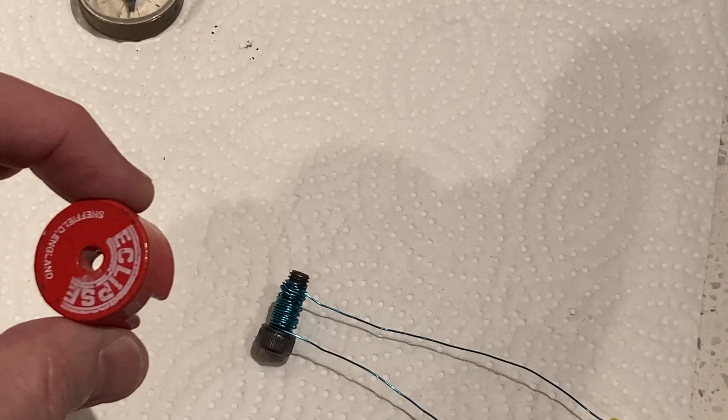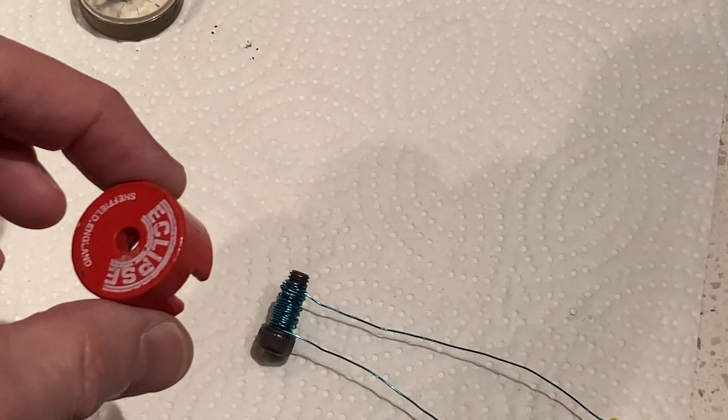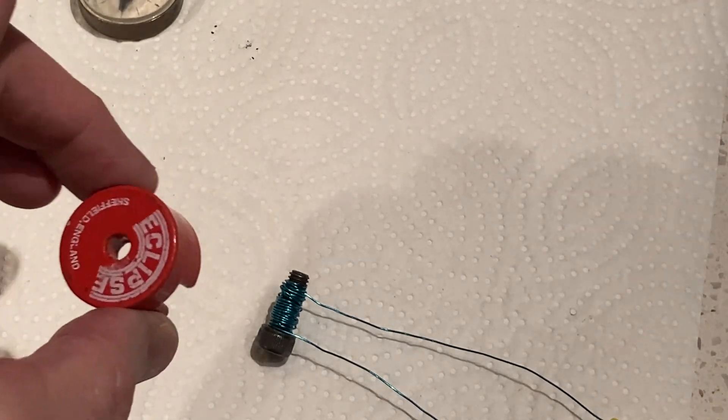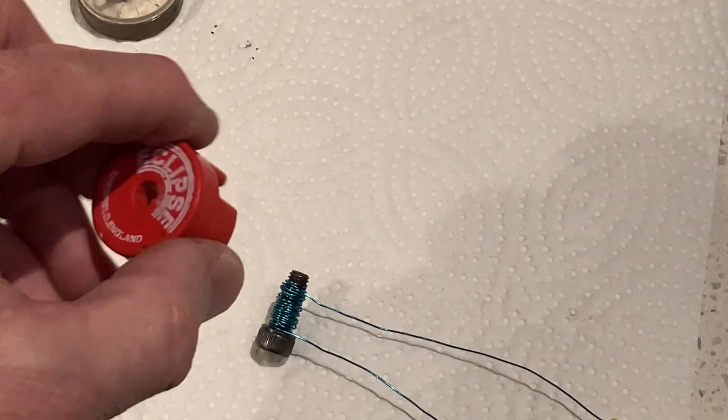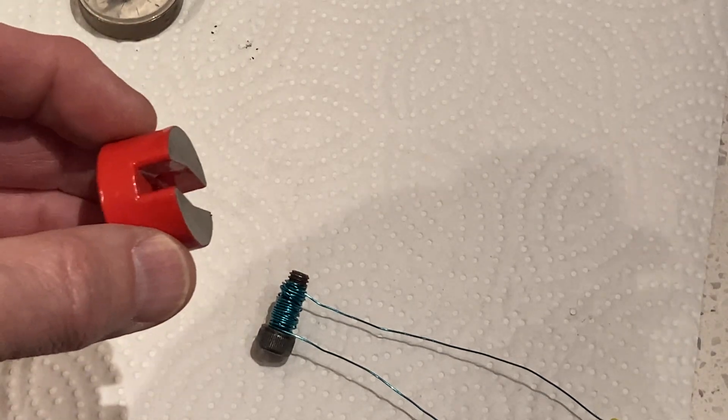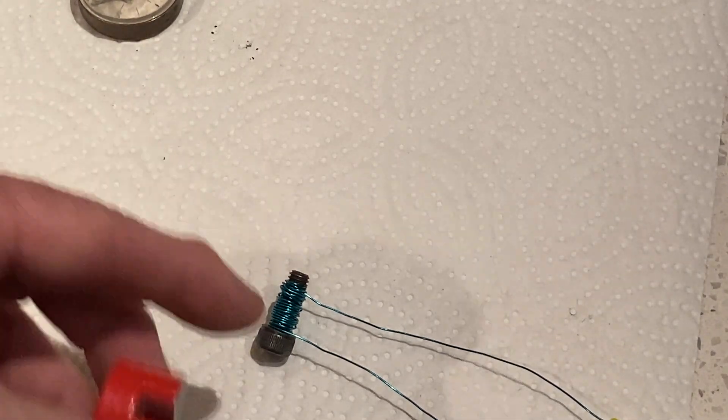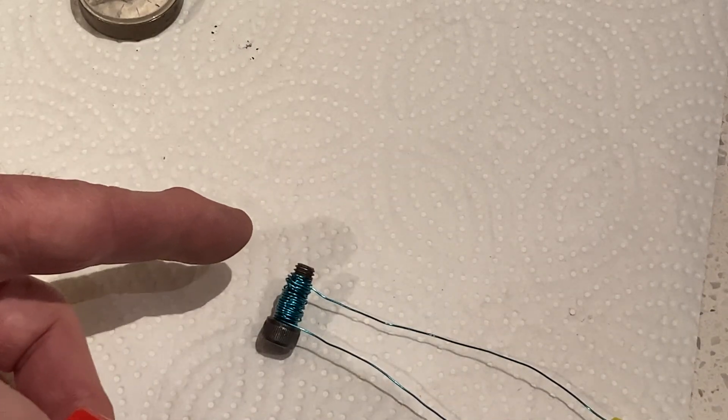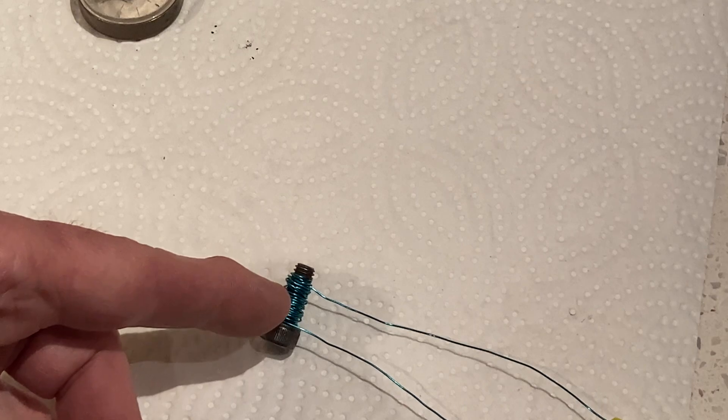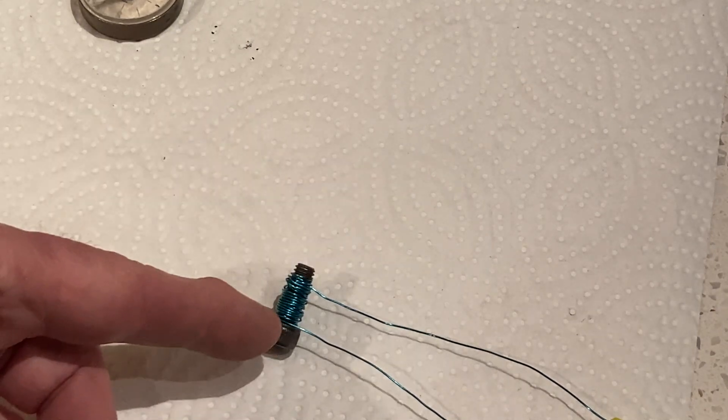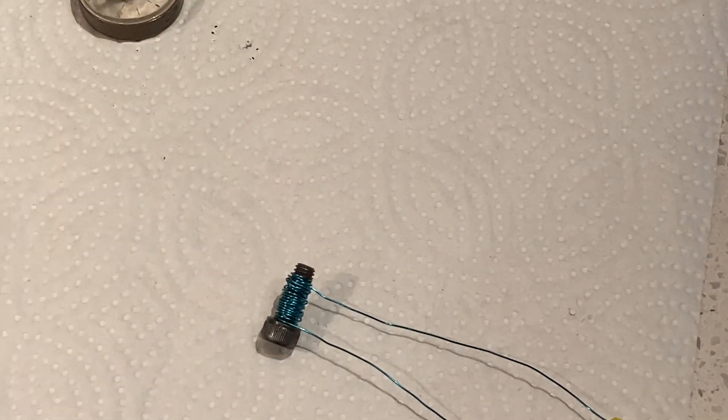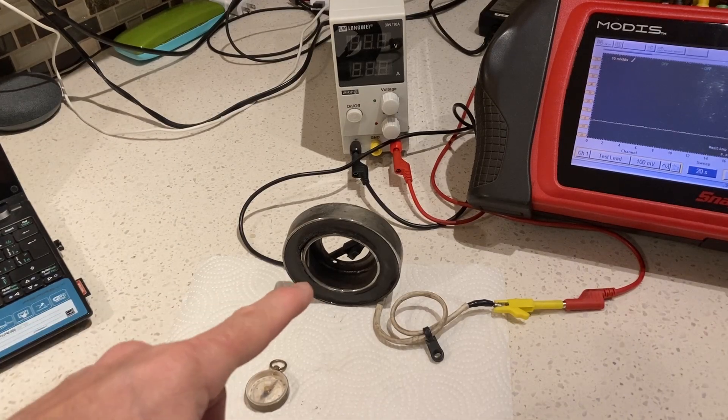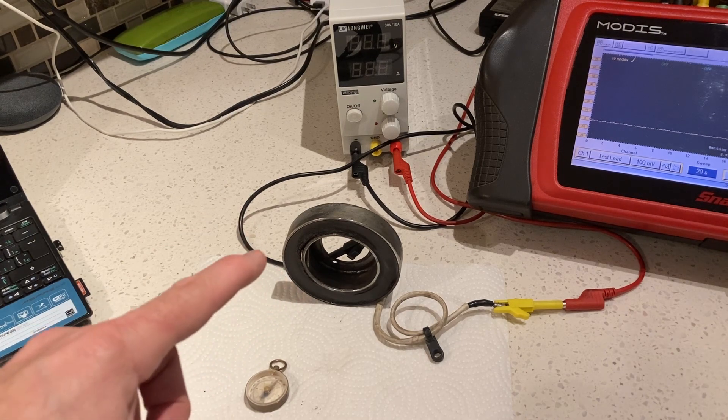Your high school or even grade school physics textbooks would have told you that a coil of wire can not only be used to induce electricity, but you can use electricity to produce an electromagnet. Basic grade school science.